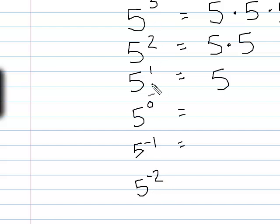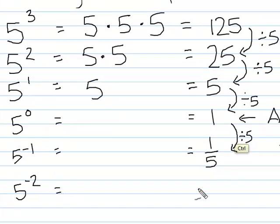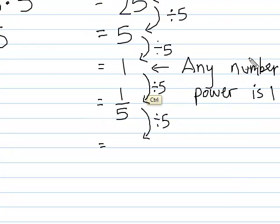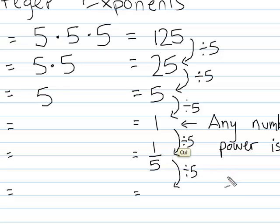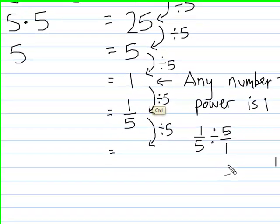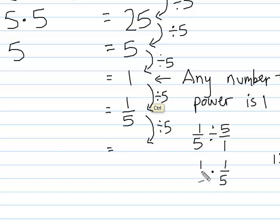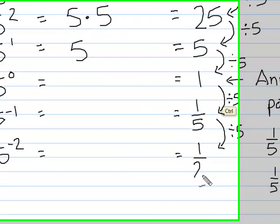Five to the negative two power is next. To figure that out, I divide by five again — so one-fifth divided by five. Since five is the same as five over one, when you divide fractions you flip the second fraction and change to multiplication: one-fifth times one-fifth equals one over twenty-five. So five to the negative two is one over twenty-five.